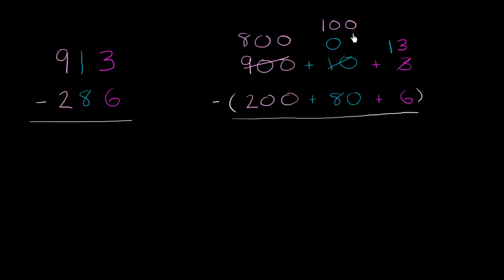Notice, this still adds up to 913. 800 plus 100 plus 13 is 913. Why is this valuable? Well, now in every column I'm subtracting a smaller number from a larger.